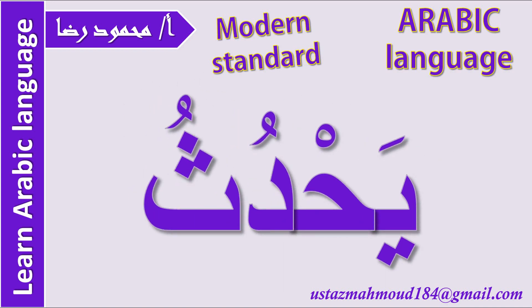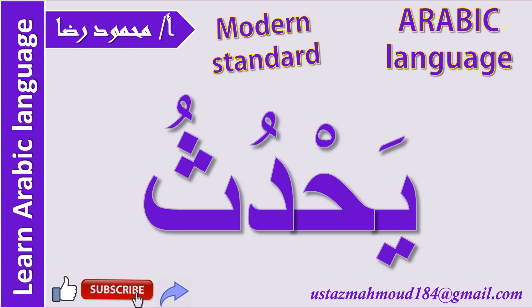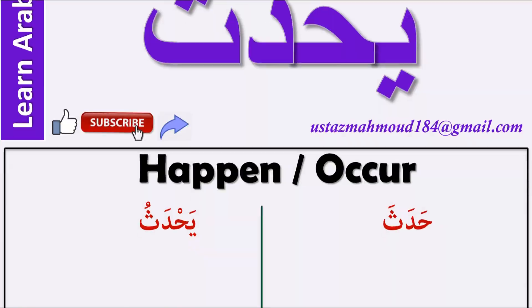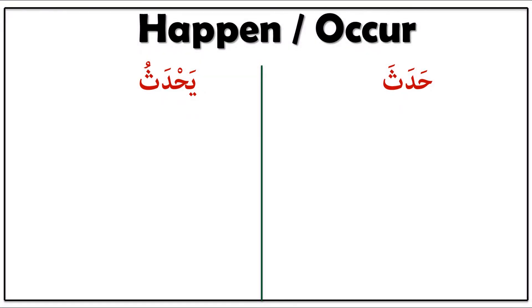Before we start, please don't forget to like this video, subscribe to the channel, and if you could share this video with your friends I'd be grateful, because this really helps me a lot. Thank you. Now let's see what the meaning of yahdothu is. Yahdothu in Arabic means 'happen' or 'occur.'